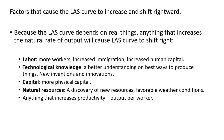Capital — if there's more physical capital, workers will be more productive, and this will shift the long-run aggregate supply curve to the right. Natural resources — a discovery of new resource deposits or favorable weather conditions for growing crops will increase output, causing long-run aggregate supply to shift right. Anything that increases productivity in general, or output per worker, will cause long-run aggregate supply to shift rightward.